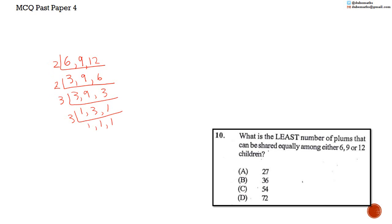So the answer, the LCM is 2 multiplied by 2 is 4. 4 multiplied by 3 is 12. 12 multiplied by 3 equals 36. So the answer is B, 36.